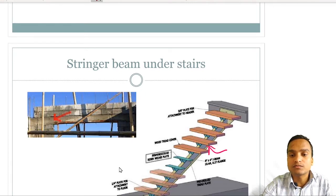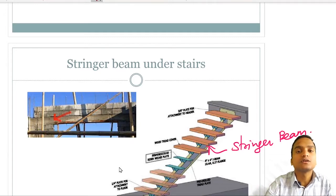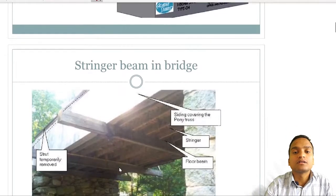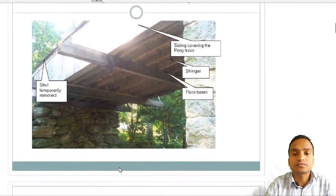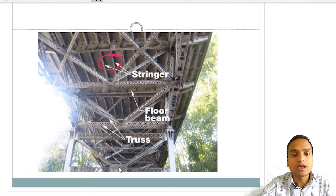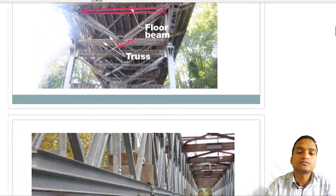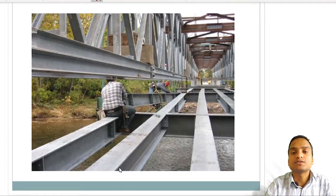Stringer beams are secondary beams supported by the primary beams. They can be seen under stairs and are also available in bridges. The small beams in bridge decks are the stringer beams, carried by the primary floor beams, which are further carried over trusses. Different pictures of bridge decks show various floor beams being applied.